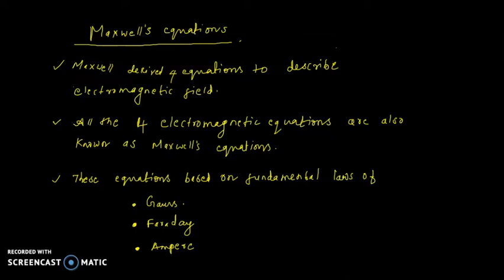In this class, we are going to learn about Maxwell's equations. Maxwell's equations are a set of coupled partial differential equations that form the foundation of classical electromagnetism. An important consequence of Maxwell's equations is that they demonstrate how fluctuating electric and magnetic fields propagate at a constant speed in a vacuum. Maxwell proposed four equations to describe electromagnetic fields.